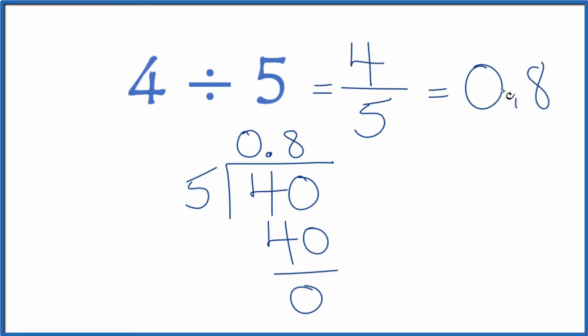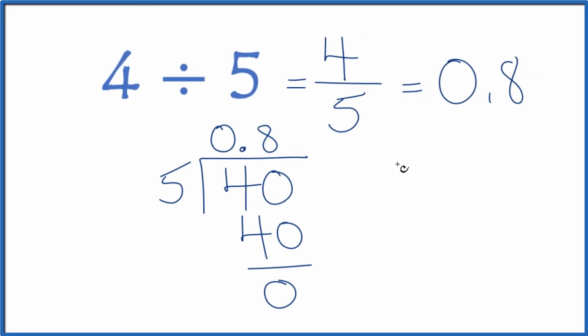0.8, that's the same thing as 4 fifths. These are equal. If you divide the fraction 4 by 5 on a calculator, you get 0.8.